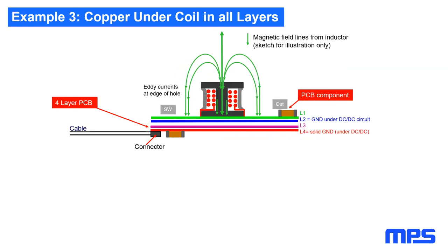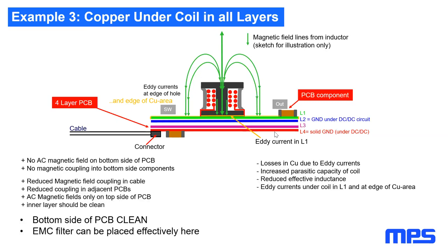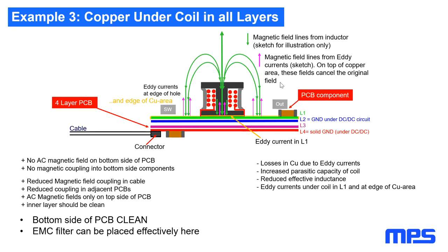The best example: placing copper under the inductor in all layers. Eddy currents form in the top layer, reducing effective inductance by perhaps one percent and creating some losses. But the benefit is that we block the AC magnetic field right at the top layer — layers 2, 3, and 4 see no high magnetic field from the coil. This board has a very clean layer 4 as system reference, filter reference, and cable connection terminal, enabling very good EMC performance. Wherever solid copper is present, AC magnetic fields induce eddy currents whose opposing magnetic field tends to cancel the original field on top of the copper — this is very important.